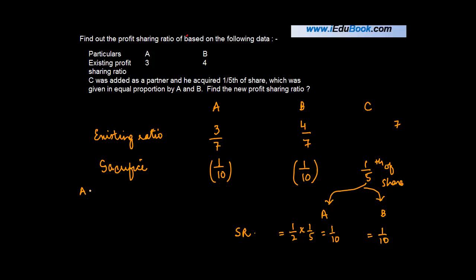So the new profit for A is going to be 3/7 minus 1/10. And for B, it's going to be 4/7 minus 1/10. We take the LCM, this will give you 30 minus 7, which is 23/70.